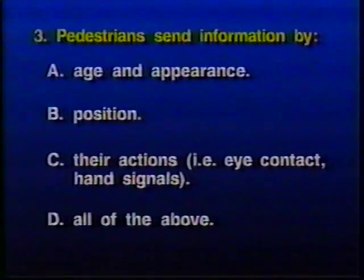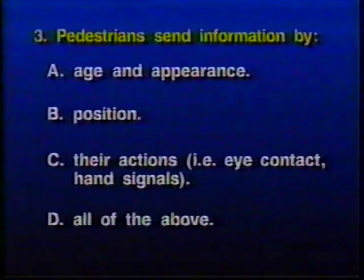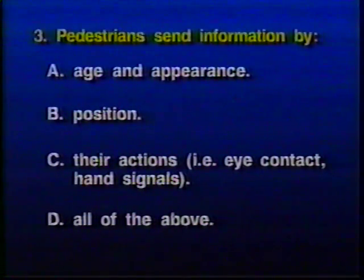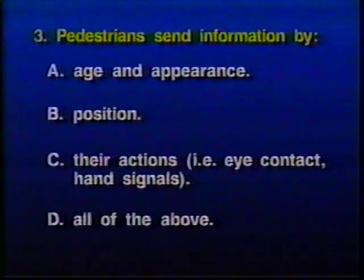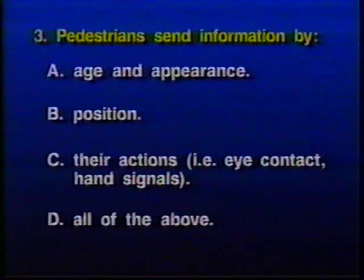Question three: Pedestrians send information by — A) age and appearance, B) position, C) their actions such as eye contact and hand signals, or D) all of the above.